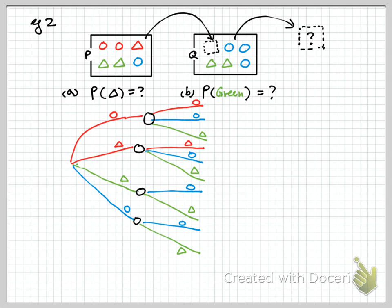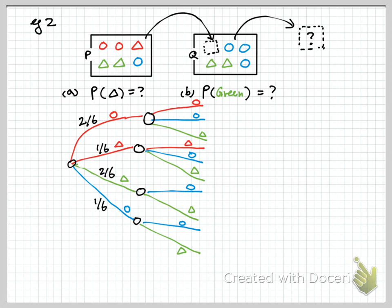Let's assign a number to each branch. This one will be 2 out of 6, this one is 1 out of 6. Always be mindful that all the probabilities coming out from the same node have to add up to 1. For the second stage: if a red circle goes to box Q, the probabilities are like this; if a red triangle goes, it would be something like this; but if a green triangle goes to box Q, that would be 3 out of 6, and the remaining would be 4 out of 6 and 2 out of 6.